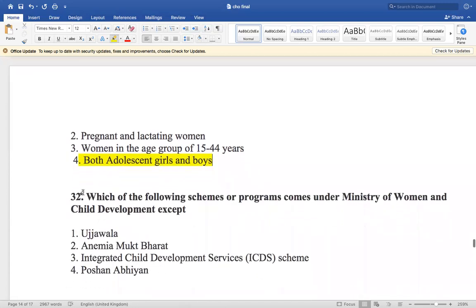Now the next question is: which of the following scheme or program comes under Ministry of Women and Child Development, except? And the options are Ujjwala, Anemia Mukt Bharat, ICDS, and Poshan Abhiyan. So which is not under the Ministry of Women and Child Development is Anemia Mukt Bharat.